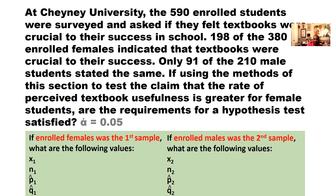The first thing, we need to read this paragraph again and make sure we can understand what's being told to us through the scientific notation. A lot of information is being hidden in this paragraph. What is X sub 1? That's the number of successes. You have to look at the claim - we're talking about the enrolled females, the textbooks were crucial to their success. So 198 said they thought it was crucial to their success, and our claim is also consistent with that. So X sub 1, which is females, what we call a success, is 198.